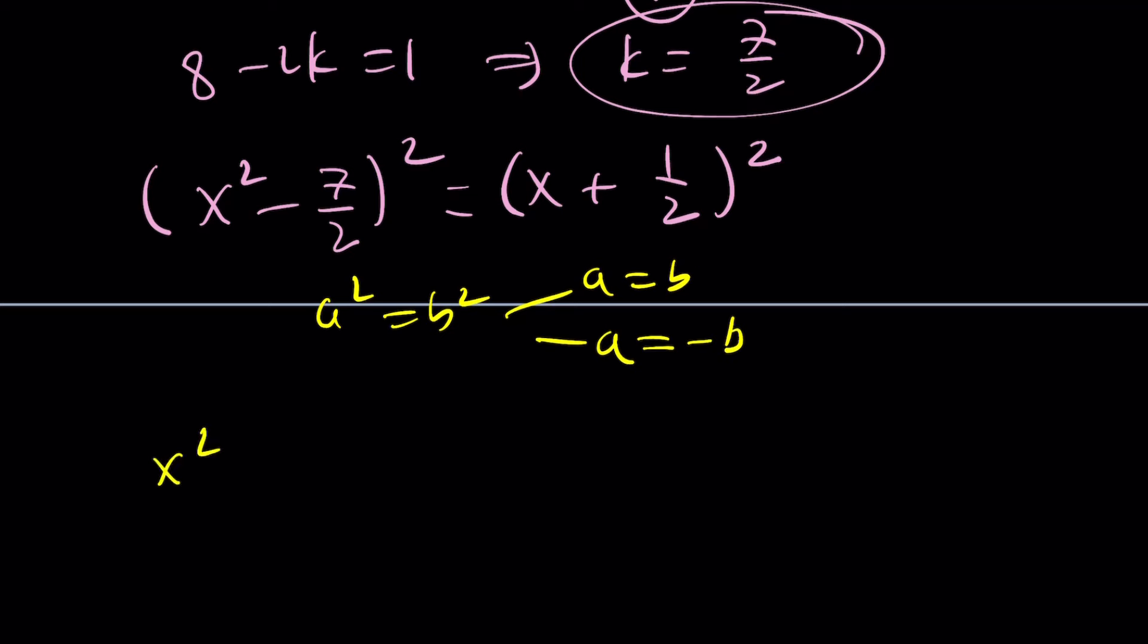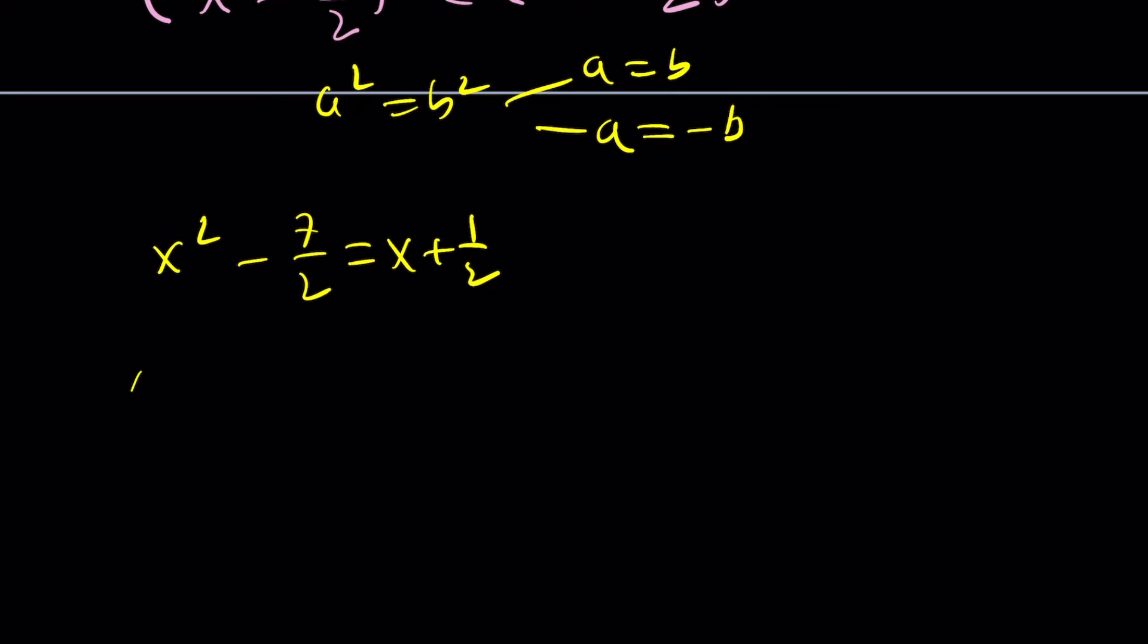So we can go ahead and write this as x squared minus 7 half equals x plus 1 half. And from here, we get the quadratic x squared minus x. You don't even have to multiply by 2 because you don't need to. And from here, we get two solutions, which is 1 plus minus square root of 17 over 2.